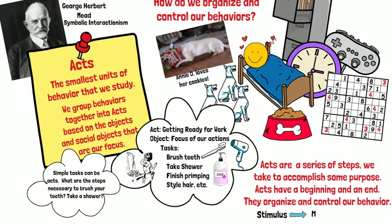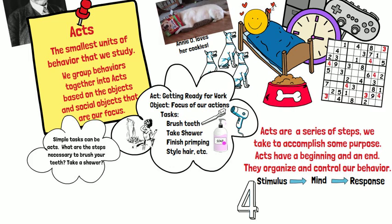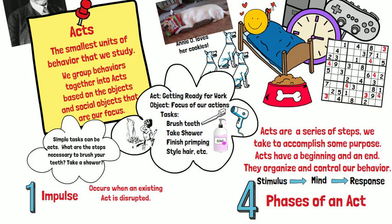Let's take a look at the four phases of an act. The first phase is impulse, and this occurs when an existing act is disrupted. So if I'm sitting, relaxing, watching television, and I hear a bell ring, the ringing bell would be the impulse.